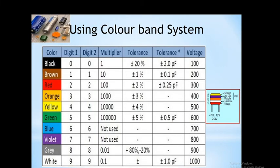We can also find capacitance using the color coding present on the surface of the capacitor. If the capacitor has a number of color bands, we always read from the top. The first top color band indicates the first significant digit, the second color is the second significant digit, the third is the multiplier, multiplied by 10 to the power minus 12 to get picofarad. The fourth band is the tolerance, and the fifth color band indicates the working voltage of the capacitor.